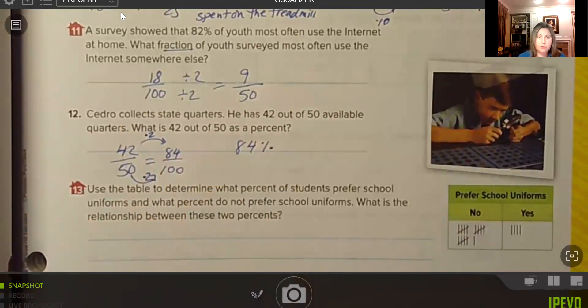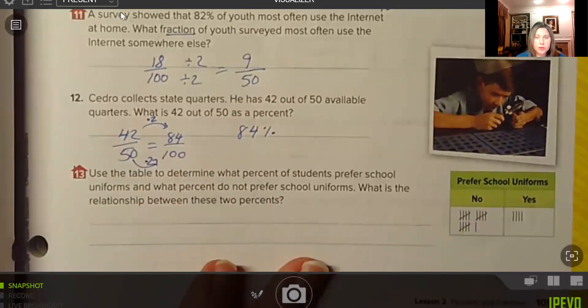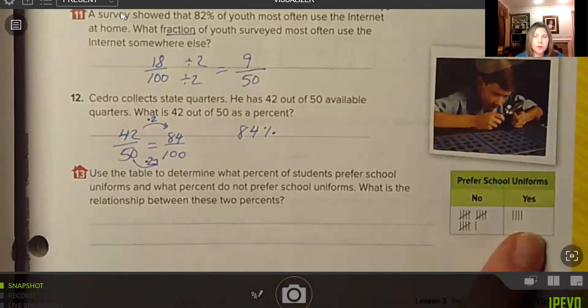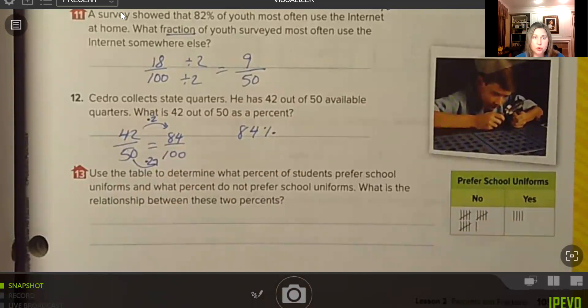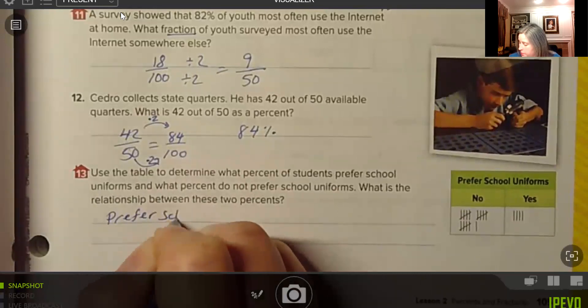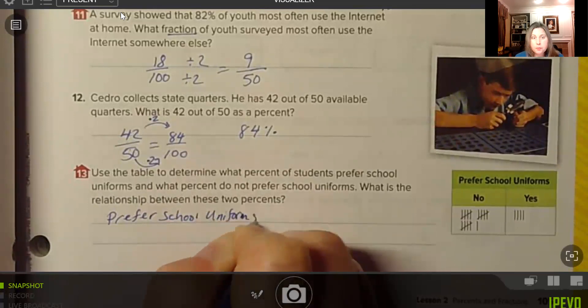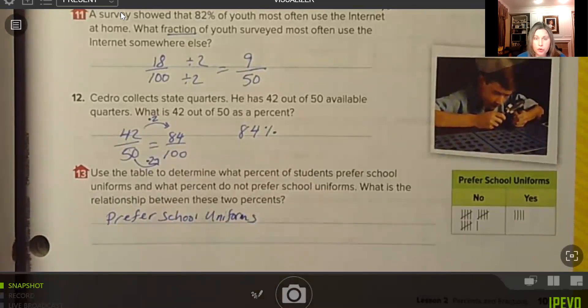So he has 84% of the quarters in his collection. He's missing a few. And then number 13, use the table. So the table is over here. Use the table to determine what percent of students prefer school uniforms and what percent do not prefer school uniforms.